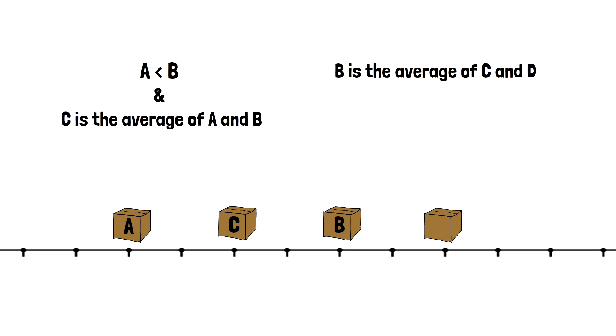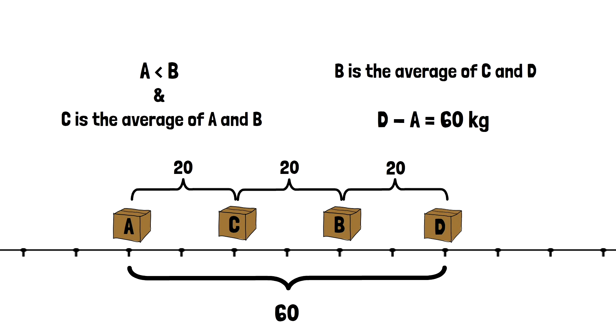Now, if you look at our line, you will see that all the boxes are placed depending on their weight. And all of them are equally spaced on the line. Since we also know that the weight of D minus the weight of A equals 60, we can easily calculate the difference between our boxes' weight. 60 divided by 3 is 20.